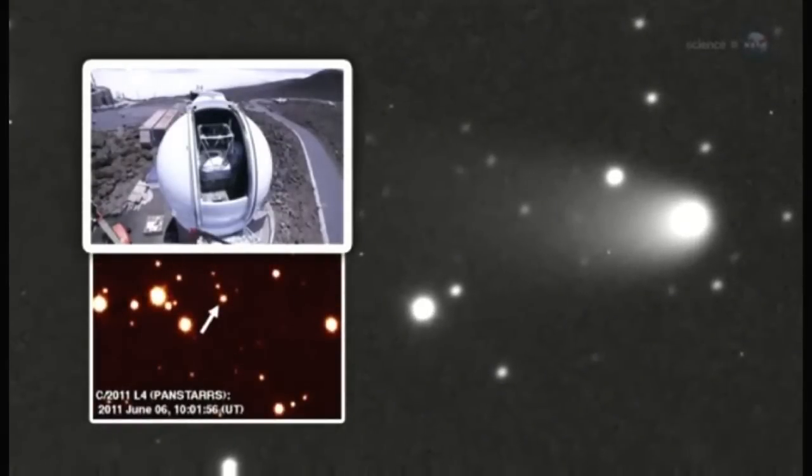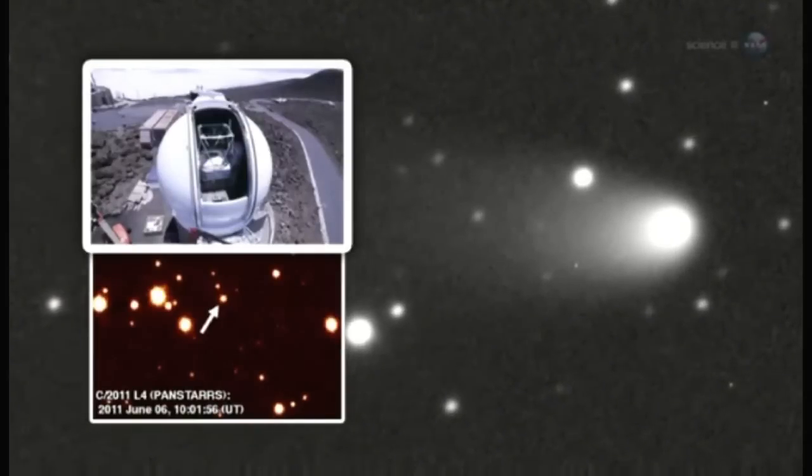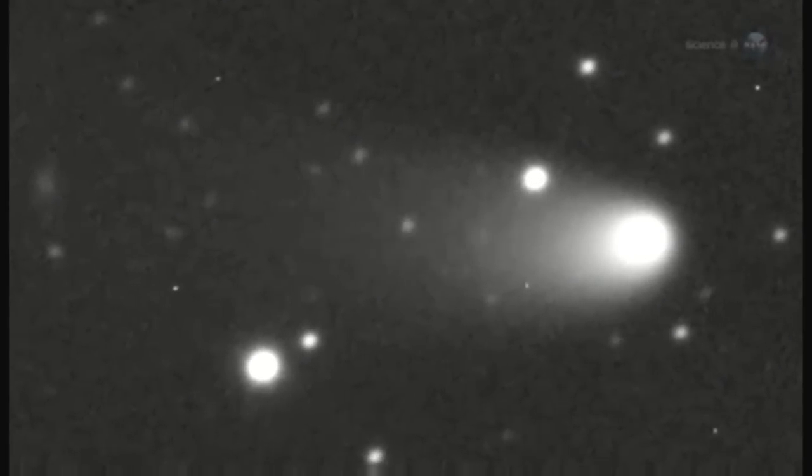Astronomers use the massive 1.8-meter telescope to scan the heavens for Earth-approaching objects, both asteroids and comets, that might pose a danger to our planet. In June 2011, a comet appeared and was named PAN-STARS after the acronym for the telescope.